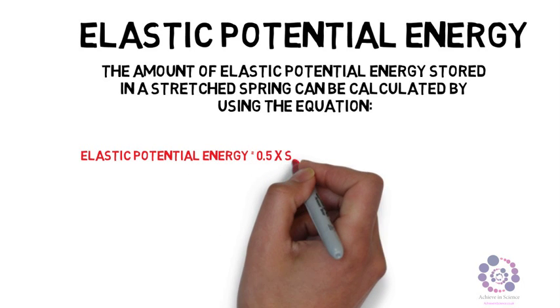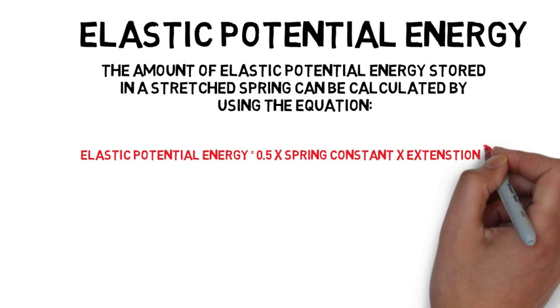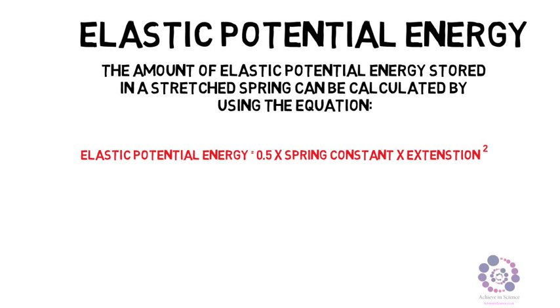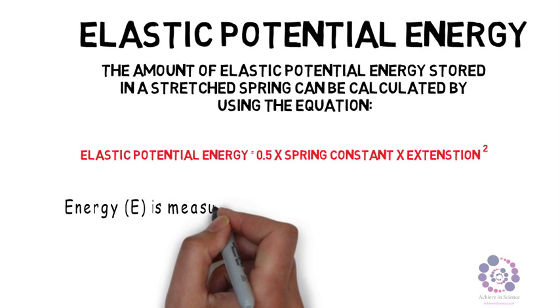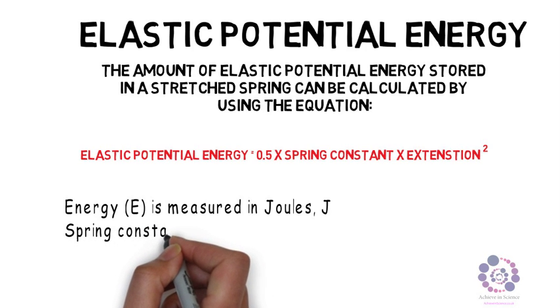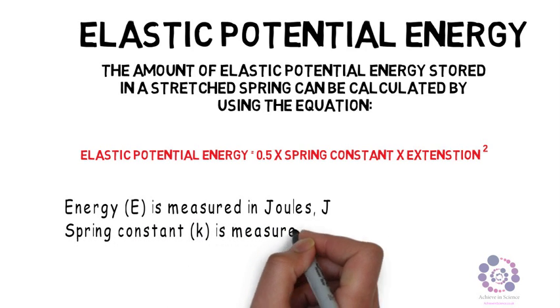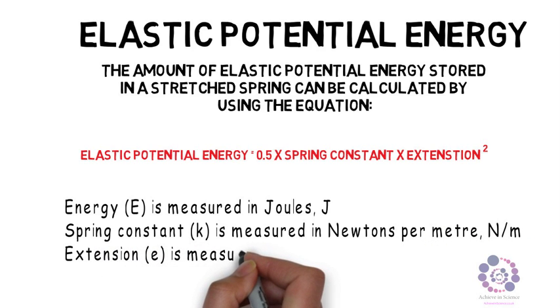In this equation, energy is measured in joules, given the capital J. The spring constant is given the letter K, and is measured in newtons per metre, capital N slash M. Extension, given the symbol E, is measured in metres, M.